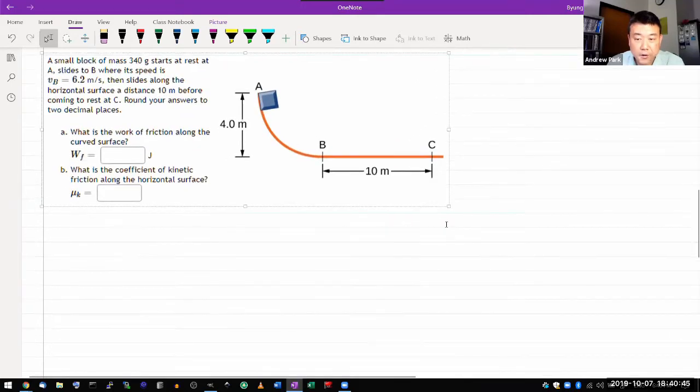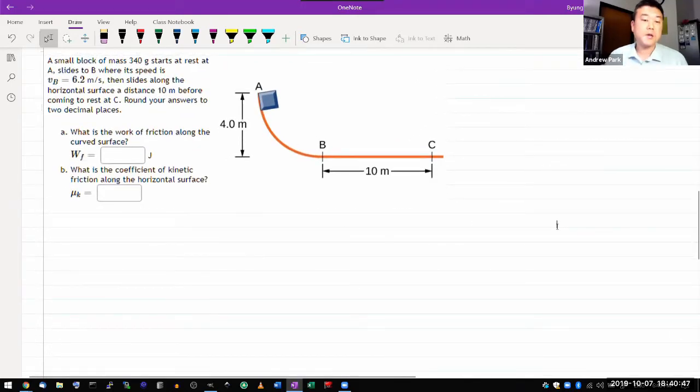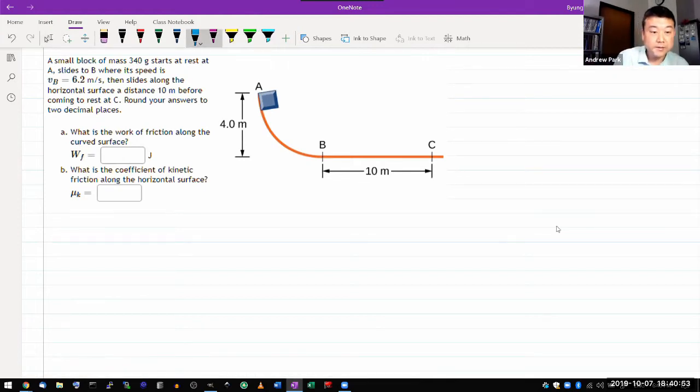So this is technically not a conservation of energy question because there is friction. I guess it doesn't explicitly say there's friction, except it makes a mention of the work of friction. If it's frictionless, then it's zero. So just because the question asks that, friction must not be zero.